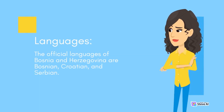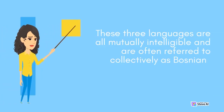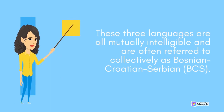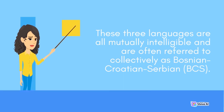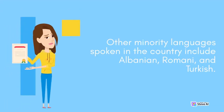The official languages of Bosnia and Herzegovina are Bosnian, Croatian, and Serbian. These three languages are all mutually intelligible and are often referred to collectively as Bosnian-Croatian-Serbian (BCS). Other minority languages spoken in the country include Albanian, Romany, and Turkish.